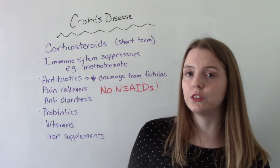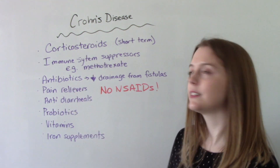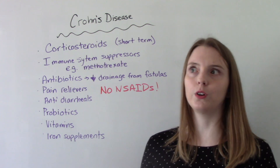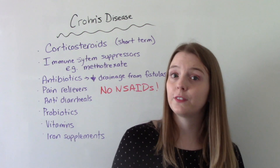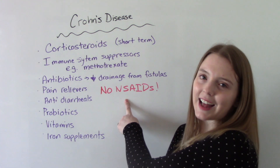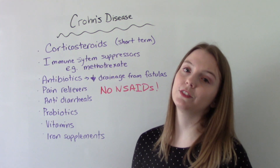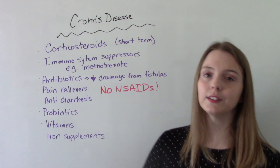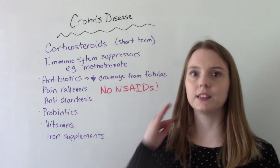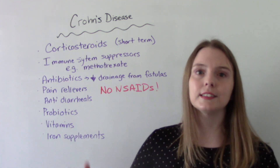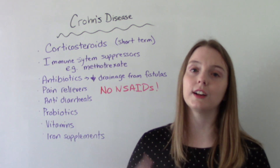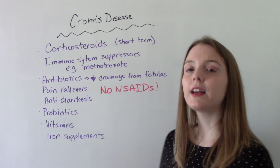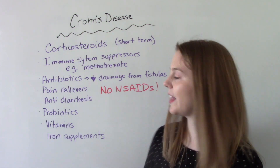Other potential medications your patient might be on include antibiotics, used to decrease drainage from fistulas. Pain relievers may be given for the abdominal pain, but something very important to remember: no NSAIDs — we do not give NSAIDs as pain relievers to Crohn's patients because that will make it worse. They might be on antidiarrheals for frequent loose stools, probiotics for malabsorption, and vitamins and supplements because of weight loss, poor appetite, and malabsorption. They'll often be on iron supplements as well, because Crohn's can cause anemia and fatigue.